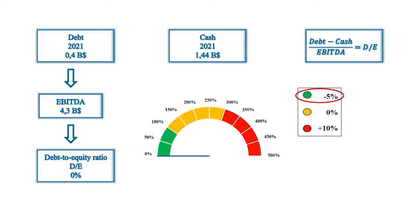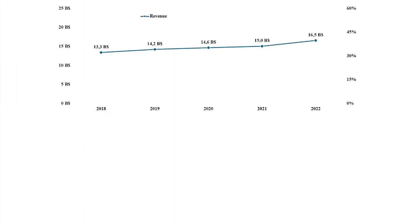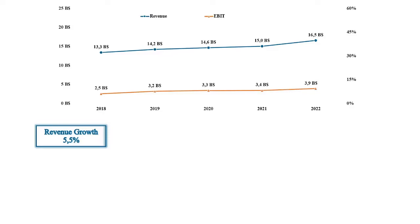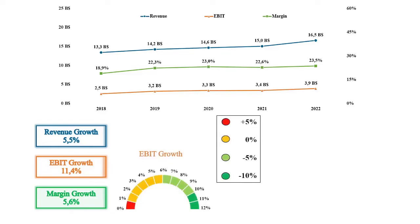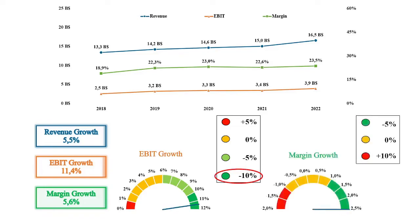Growth is a very important factor for business sustainability. Revenue has increased from $13.3 billion in 2018 to $16.5 billion in 2022, giving an average growth of 5.5%. In the same period, EBITDA increased from $2.5 billion to $3.9 billion, giving an average growth of 11.4%. The EBITDA margin increased from 18.9% in 2018 to 23.5% in 2022, representing an average margin growth of 5.6%. An EBITDA growth of 11.4% is inside the dark green section of the rating scale, giving a minus 10%, and for the average margin growth of 5.6%, I deduct a further 5% from the margin of safety.